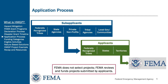Here we will look at the general application process for HMGP. Eligible sub-applicants submit their sub-applications to the relevant eligible applicants. Applicants then review and prioritize funding and submit the prioritized sub-applications to FEMA for review and funding. It is important to note that individuals cannot apply directly for HMGP funding — they would need to work with local government offices to submit an HMGP grant proposal. Interested applicants should contact their state hazard mitigation officer. Also, FEMA does not select projects; FEMA reviews and funds projects submitted by applicants.